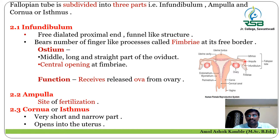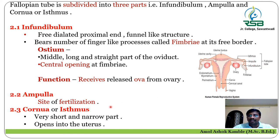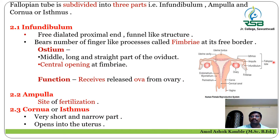The ampulla is the site of fertilization, where the fusion of the male sperm with the female egg or ovum takes place. The last part of the fallopian tube is the cornea or isthmus, a very short and narrow part which further opens into the uterus.